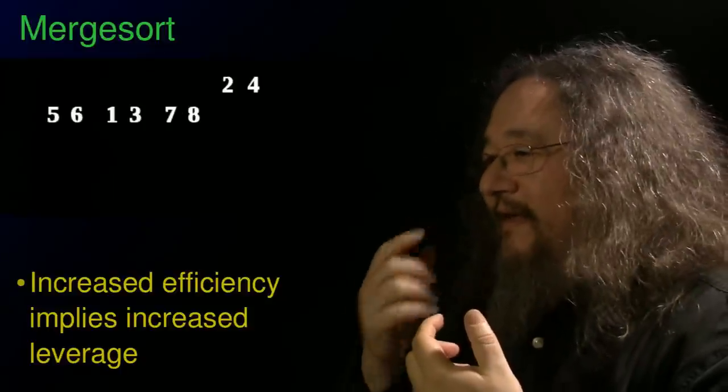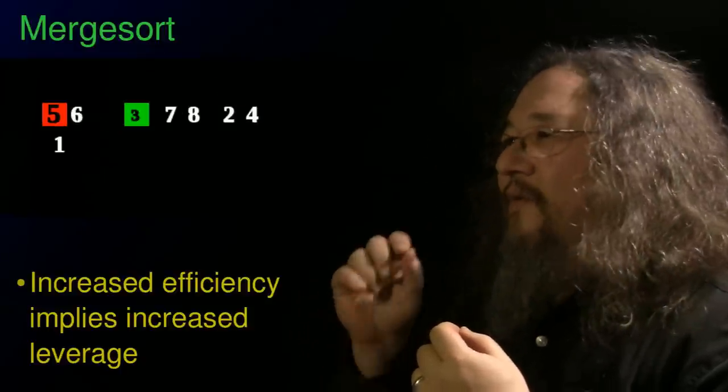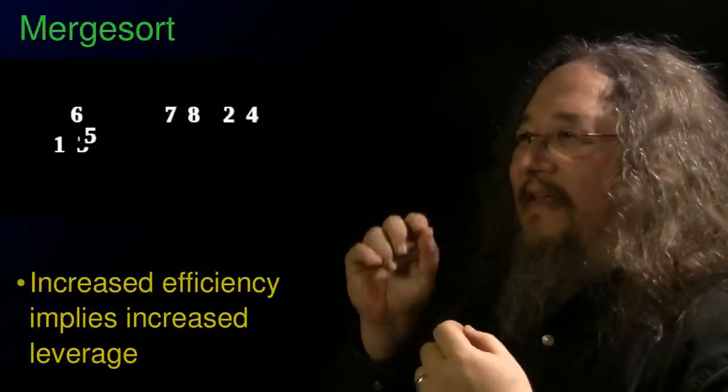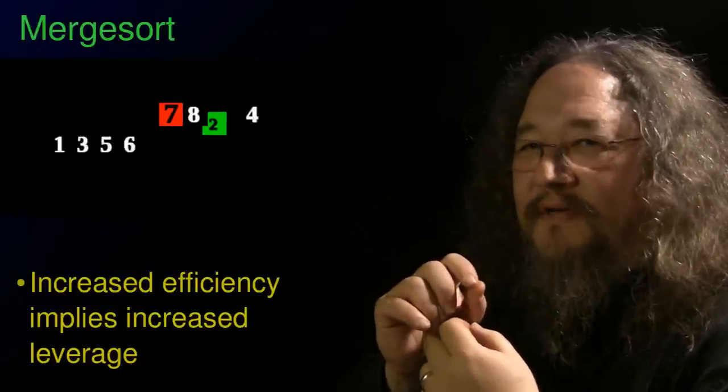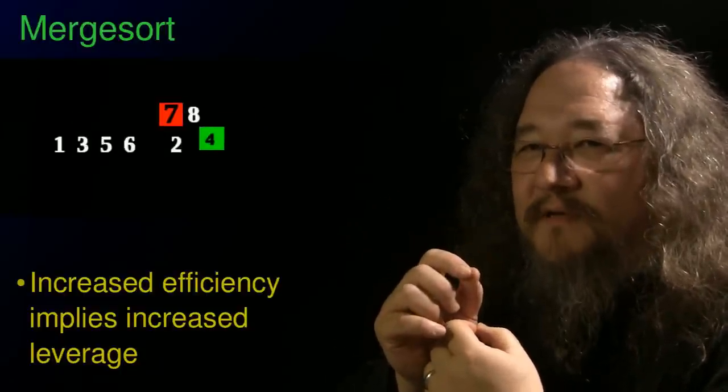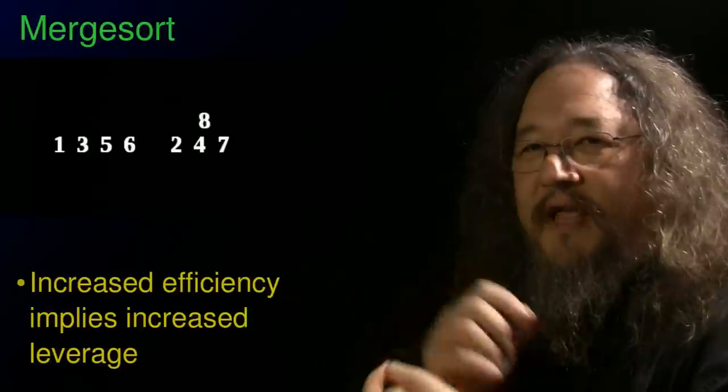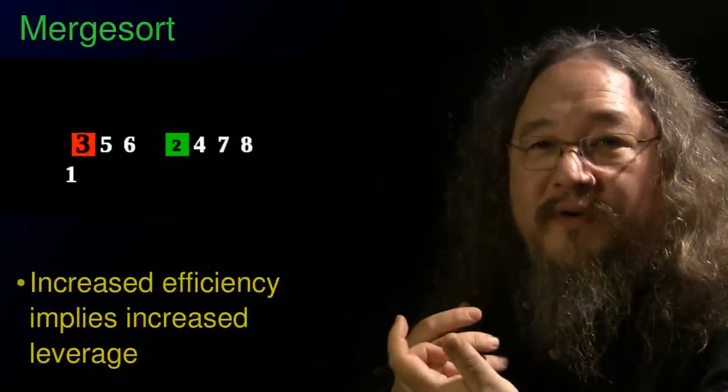So the increased efficiency comes from the fact that merge sort is designed so that it can end up making these long distance moves. It does one comparison and then moves guys a long way, so that it has a large leverage. And the increased efficiency implies increased leverage. And so if it's the case that the comparison routine might fail sometimes, then that leverage which just helped us so much can now come around and hurt us so much. And here's the data that we got.